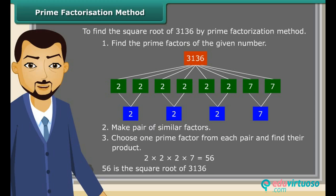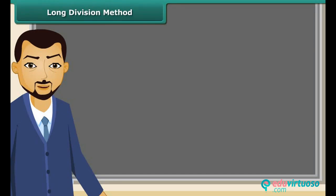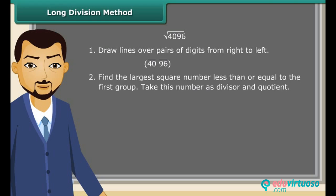For large numbers, the prime factorization method of finding square root becomes difficult. So we use long division method. Let us look at the steps. First of all, draw lines over pairs of digits from right to left. Next, find the largest square number less than or equal to the first group. That is 40. Since 36 is less than 40, we take 6 as the divisor and 6 as the quotient. Now, subtract 36 from 40.